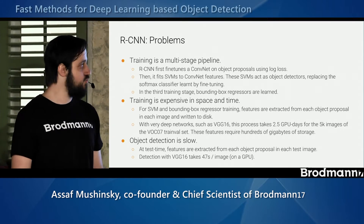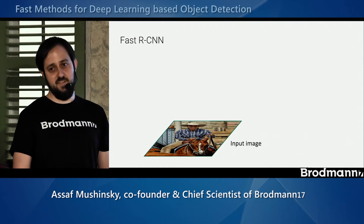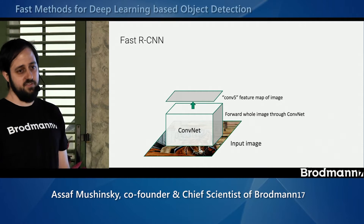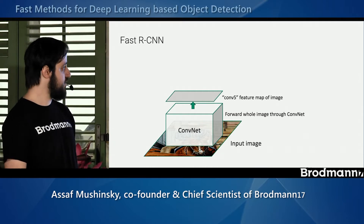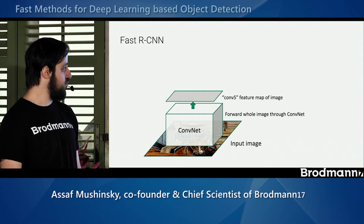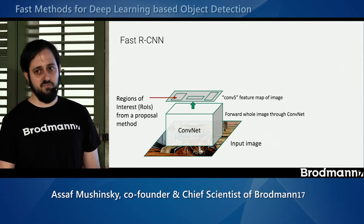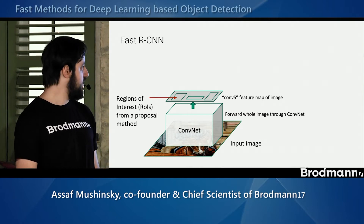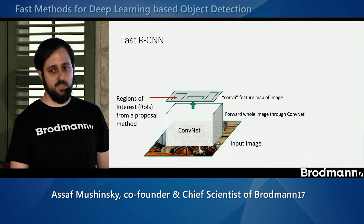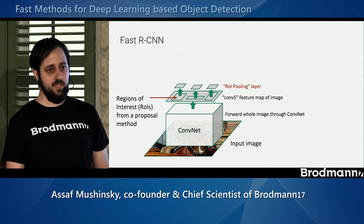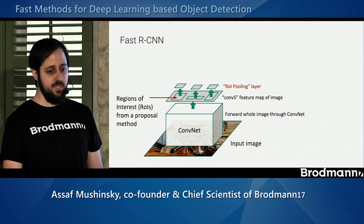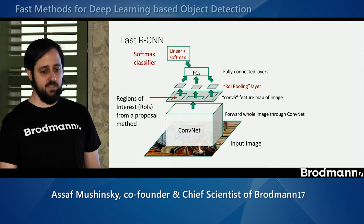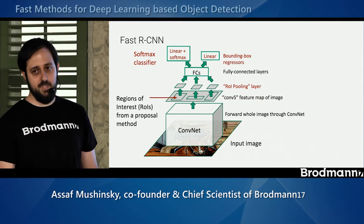So, what can we do to make it faster? We can use Fast RCNN. Instead of extracting features for every specific region, we extract features by applying the network to the entire image. Then we take the region of interest and sample the feature space instead of the image space. This allows us to normalize those features into a predefined size, over which we apply a few fully connected layers, a classifier, and a bounding box regression.